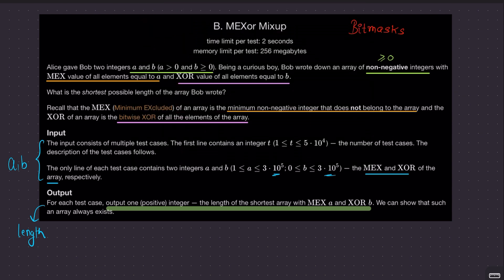To quickly summarize the question: we are given two integers, a and b. a is greater than 0 — that is important — and b is greater than or equal to 0. So a is positive and b is non-negative. What we want is an array of non-negative integers, with MEX value equal to a and XOR value equal to b.